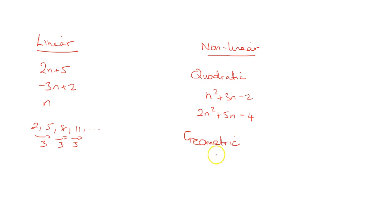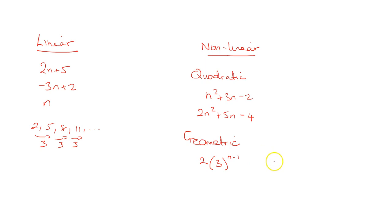In terms of geometric sequences, that's where the terms multiply each time. What the sequence itself might look like could be something like 2 times 3 to the power of n minus 1. A quick example: it could be 2, 6, 18, 54, etc. — each time we're multiplying by 3. So instead of adding by the same amount each time, we're multiplying by the same amount. That's a geometric sequence.